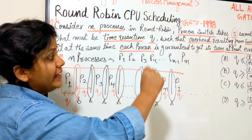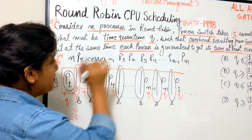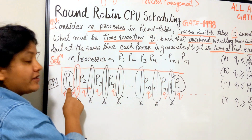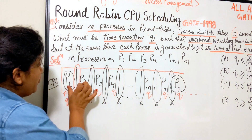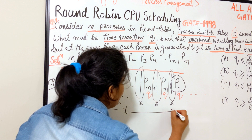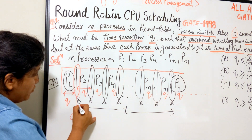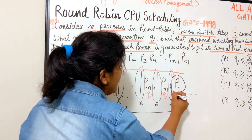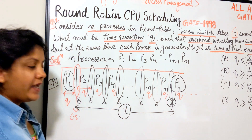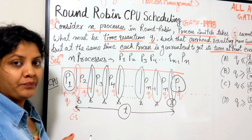Now, where does the term t come in? The condition states each process is guaranteed to get its turn at least every t seconds. If p1 is scheduled first, the next time p1 gets scheduled is its second turn. The time between p1 finishing its first turn and p1 starting its second turn — that gap must not exceed t seconds. So from the moment p1 finishes and the context switch to p2 begins, up until p1 gets loaded again before starting its next quantum, that time is t.